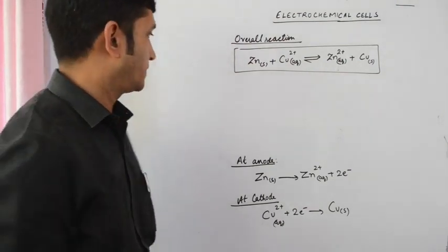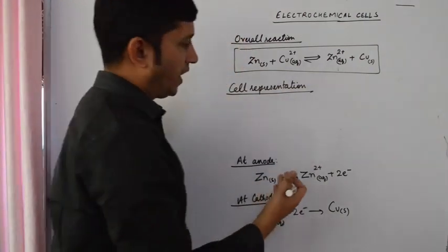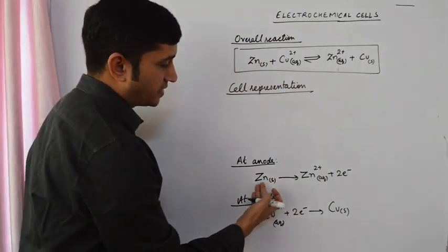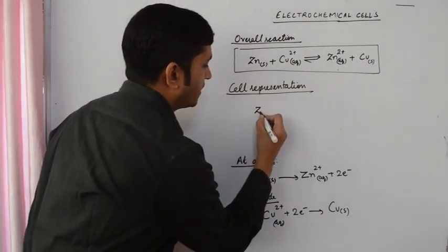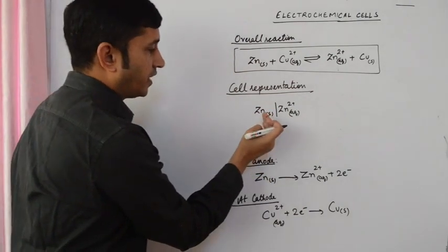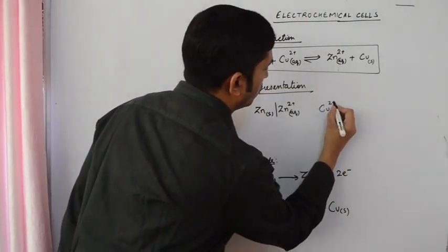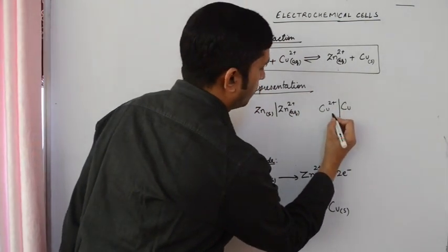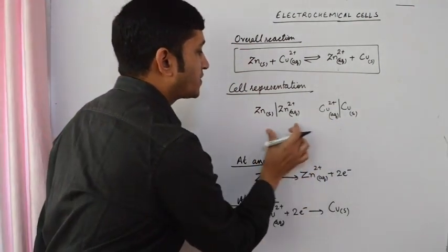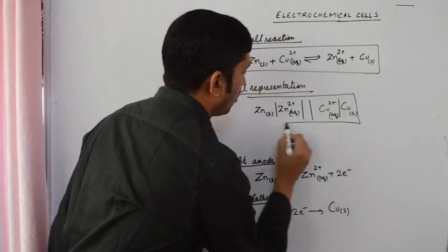A cell can also be represented in the following manner. On the left-hand side we write the oxidation half cell, and on the right side we write the reduction half cell. In the oxidation half cell, zinc is getting oxidized to zinc ion, written as: Zn | Zn²⁺. A vertical line represents that the electrode and electrolyte are separated. On the right side we write: Cu²⁺ | Cu. In the cathode half cell, copper ion is getting reduced to copper. Both half cells are separated by two vertical lines representing the salt bridge. This is the pattern of representation of an electrochemical cell.